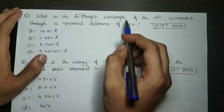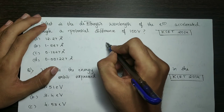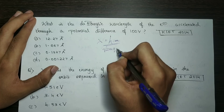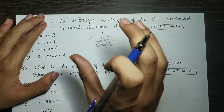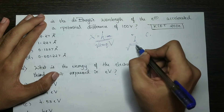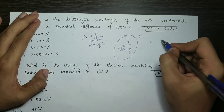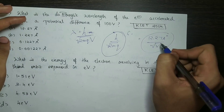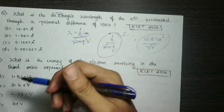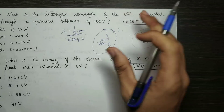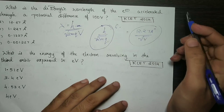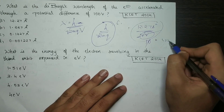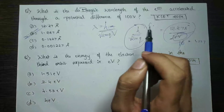Next question: What is the de Broglie wavelength of the electron accelerated through a potential difference of 100 volts? Lambda equals h divided by square root of 2mqV. I already simplified it to 12.27 angstroms divided by square root of V. I have the formula in the book for an electron, proton, and alpha particle. With V equal to 100, the answer is 1.227 angstroms — option B.